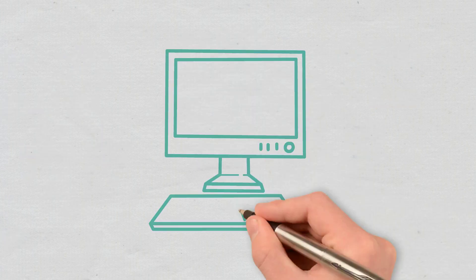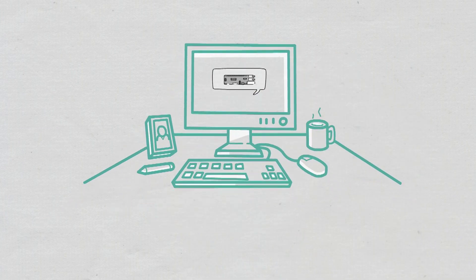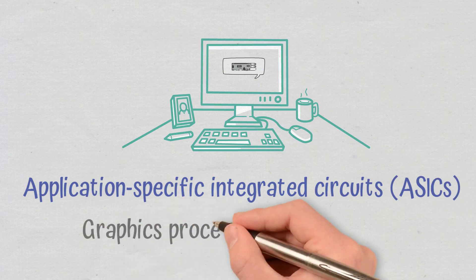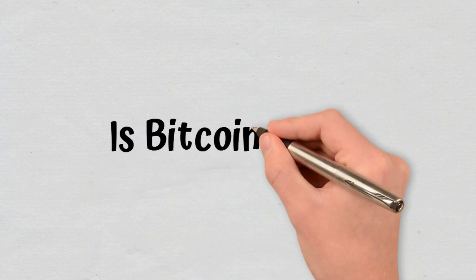In order for mining to happen, computer chips are used, like application-specific integrated circuits and graphics processing units. Is Bitcoin safe?